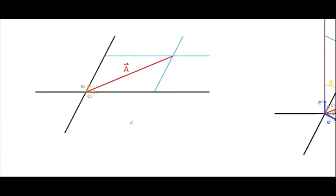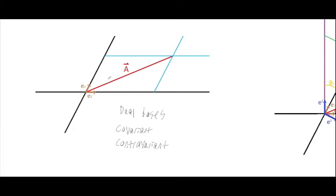In this video I'm going to discuss the idea of the dual basis vectors, so dual bases, and this will introduce us to the idea of the covariant and contravariant components. What I have up here is one way we can get the components for our vector if we are not in the orthonormal bases.